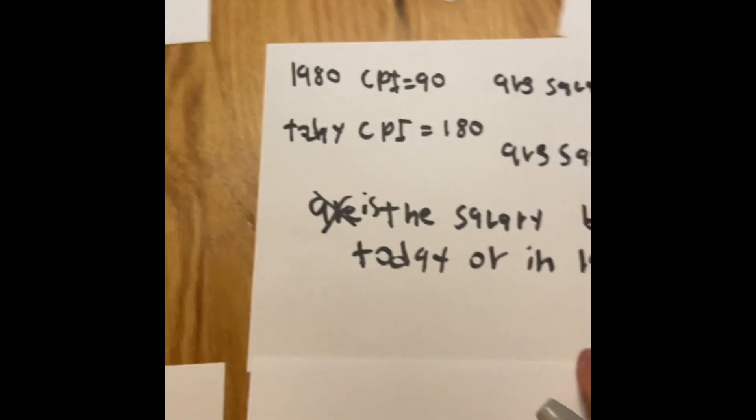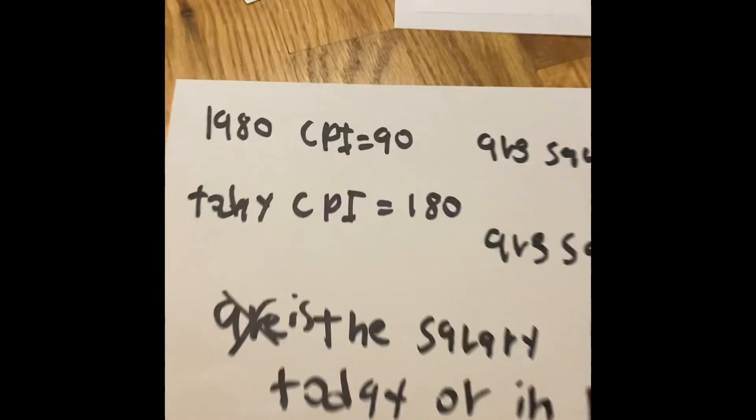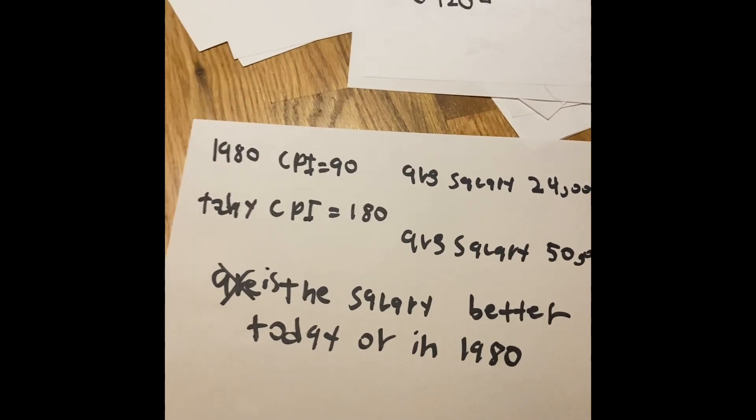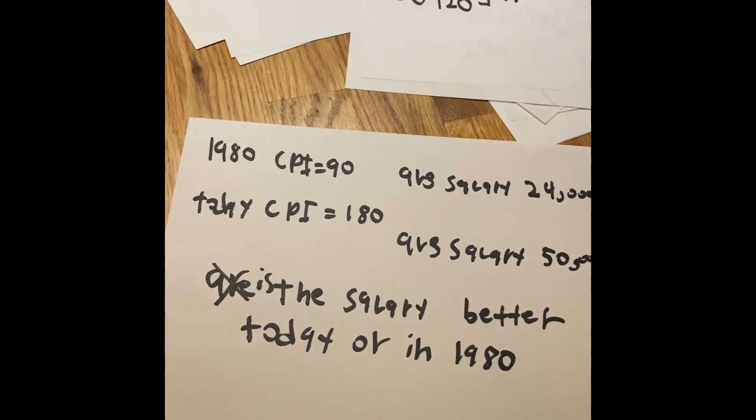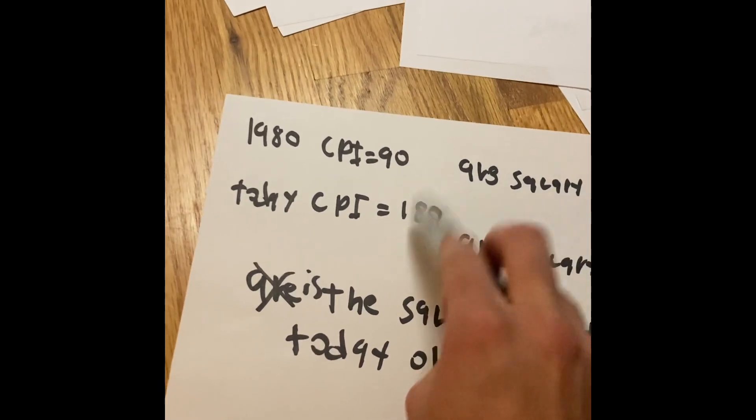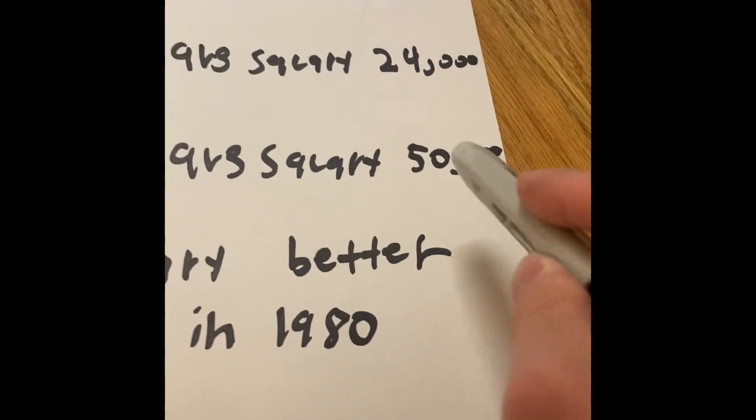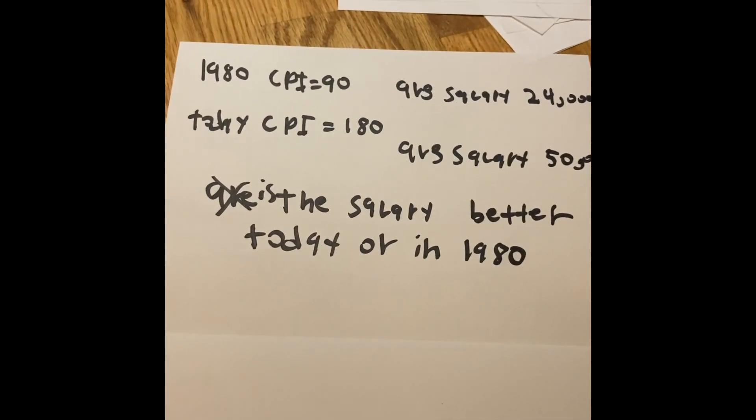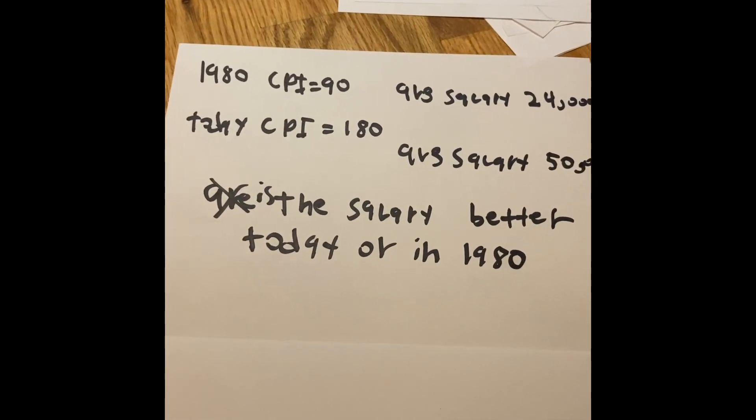Here's an example. In 1980, the CPI was 90 and the average salary was $24,000. However, today, the CPI is 180 and the average salary is $50,000. The main question is, is the salary better today or in 1980?